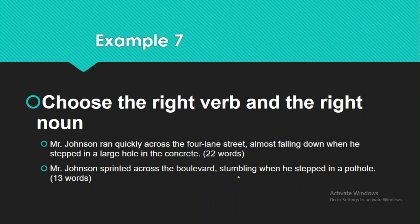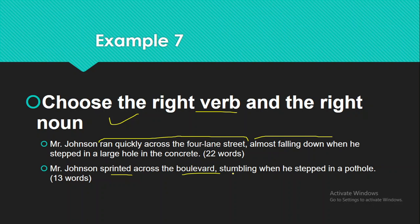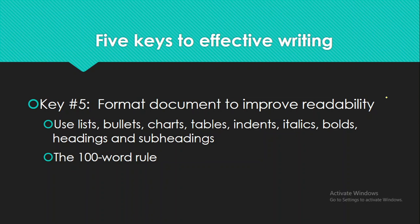You should also use the right verb and right noun to create impact. For example: 'Mr. Johnson ran quickly across the four-lane street, almost falling down when he stepped in a large hole in the concrete.' Instead, write: 'Mr. Johnson sprinted across the boulevard, stumbling when he stepped in a pothole.' 'Sprinted' replaces 'ran quickly,' 'boulevard' replaces 'four-lane street,' and 'pothole' replaces 'large hole in the concrete.' Use the right verbs and nouns to convey the message.